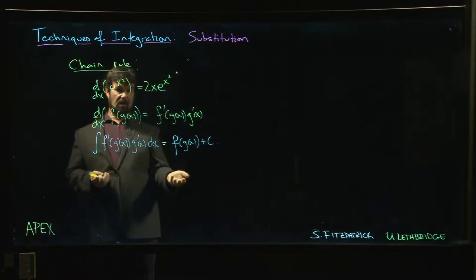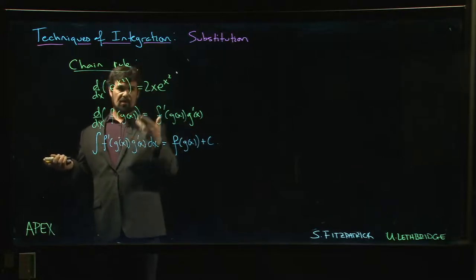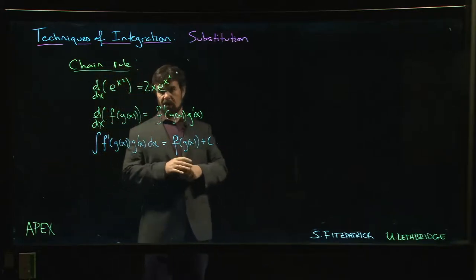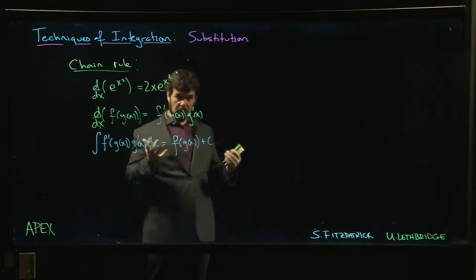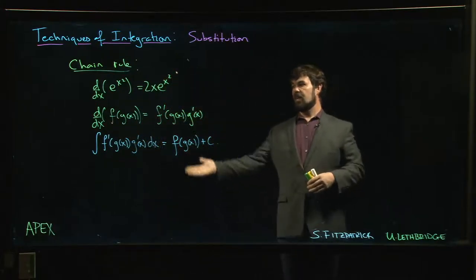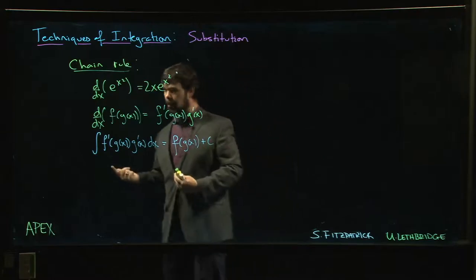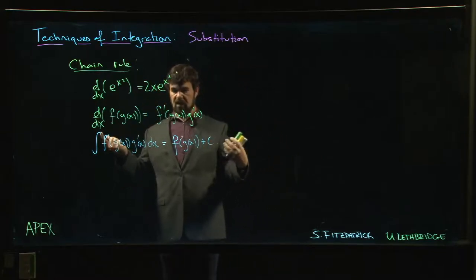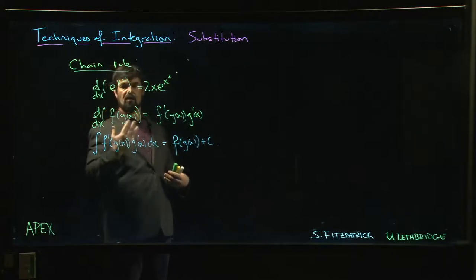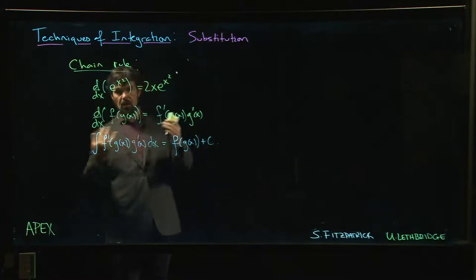Probably you won't have 2x times e to the x squared sitting there asking for its antiderivative. Maybe the 2 is missing and you just have x. If the x is missing entirely, you're really in trouble — there's no antiderivative for e to the x squared that you can find in closed form. Taking the derivative of e to the x squared is simple, but the antiderivative is essentially impossible unless you happen to have that 2x out front from the chain rule. This is why anti-differentiation gets harder — the chain rule spits out extra stuff, and if that extra stuff is missing, we can't reverse the process.